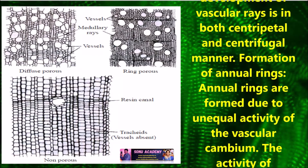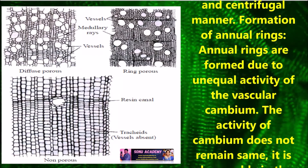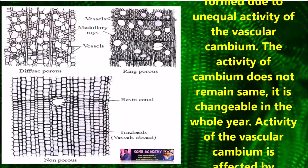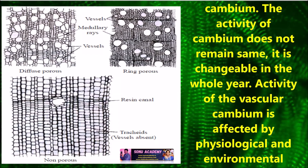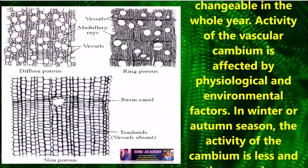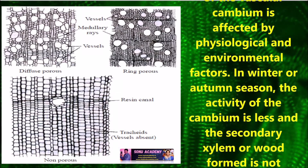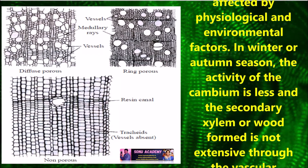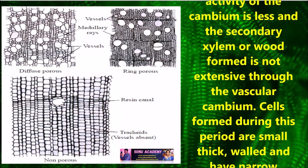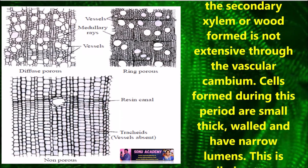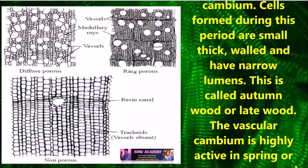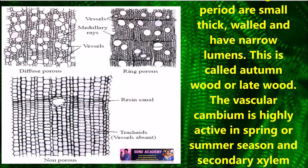Annual rings are formed due to the unequal activity of vascular cambium. The activity of cambium changes throughout the year and is affected by physiological and environmental factors. In winter and autumn seasons, the activity of cambium is less and the secondary xylem formed is not extensive. Cells formed during this period are small, with thick walls and narrow lumens. This is called autumn wood or late wood.